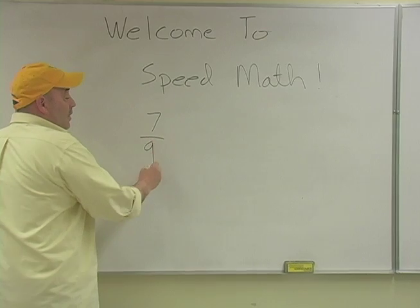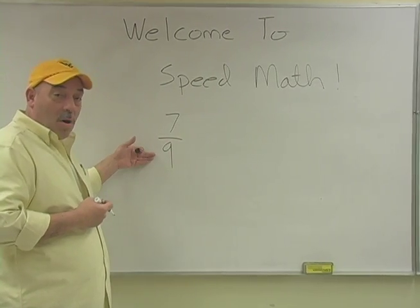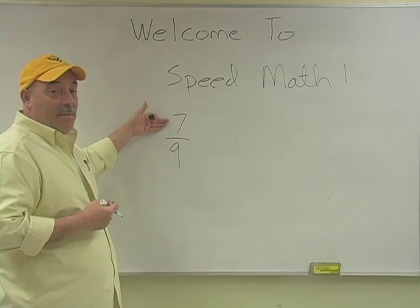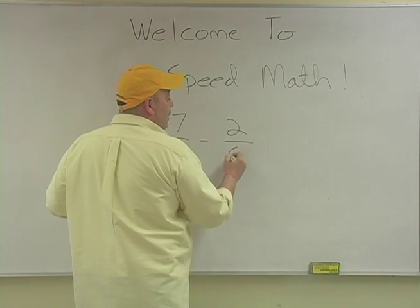Let's say we have seven ninths on this side. Nine parts, of course, and I've said this before, is the whole. And we have seven of those parts that we're using. And from that seven ninths we're going to subtract two ninths.